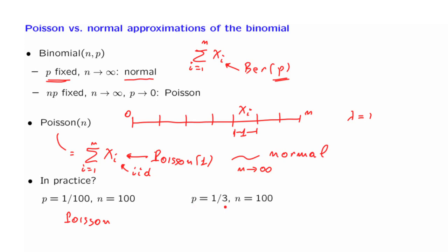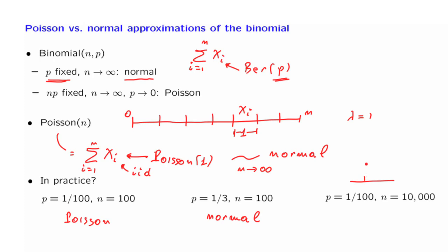On the other hand, if p is equal to 1/3, then 1/3 is not a small number, so a Poisson approximation would not apply. But n is pretty big, so a normal approximation would be appropriate. In the third case, we obtain a Poisson approximation with parameter 100, since n times p is 100. But a Poisson random variable with parameter 100 is also well approximated by a normal. Although we start with a very skewed Bernoulli distribution — with probability of success only 1/1000 — because we're adding so many of them, the central limit theorem does take hold.